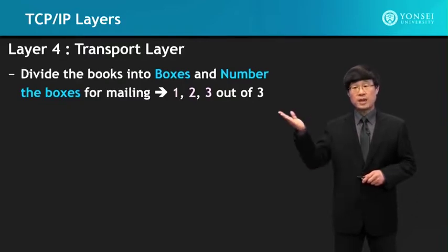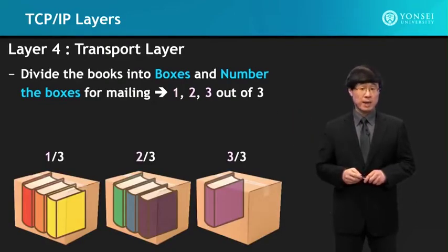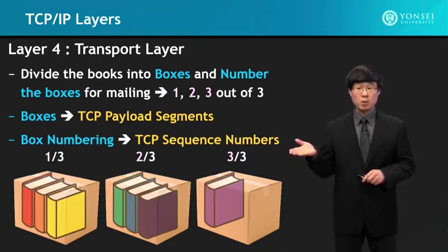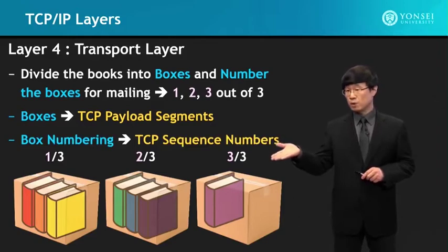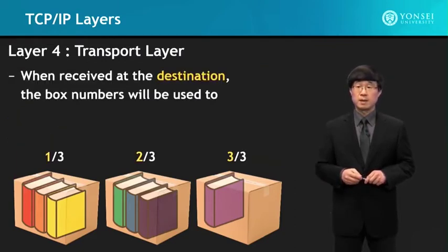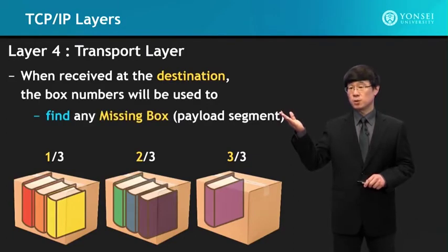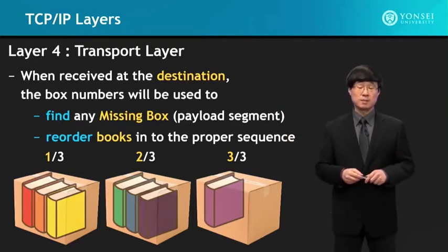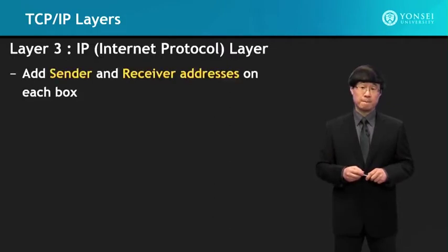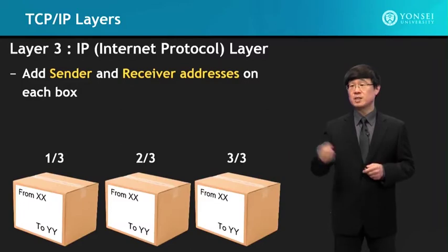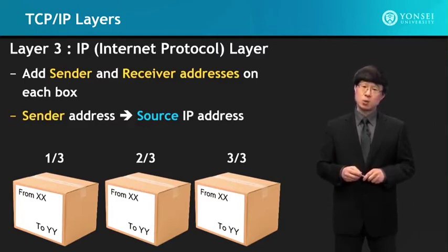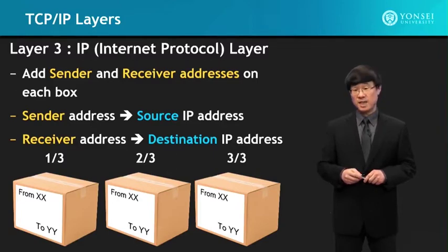At the transport layer, it divides the books into boxes and numbers the boxes for mailing. The boxes are the TCP payload segments, and the box numbering represents the TCP sequence numbers — the first box of three, second box of three, last box of three. When received at the destination, the box numbers are used to find any missing boxes and reorder the books into proper sequence. Then the IP layer adds sender and receiver addresses on each box — the sender address is like the source IP address, and the receiver address is like the destination IP address.